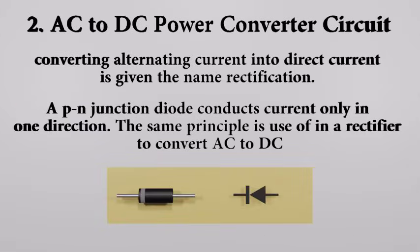For that we are using AC to DC converter circuit. Converting alternating current into direct current is given the name rectification. A PN junction diode conducts current only in one direction. The same principle is made use of in rectifier to convert AC to DC.